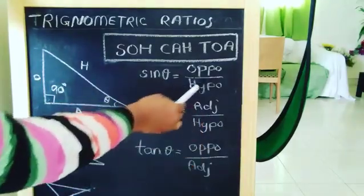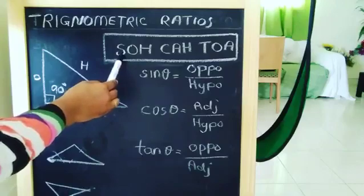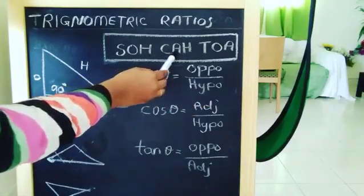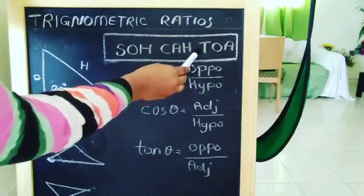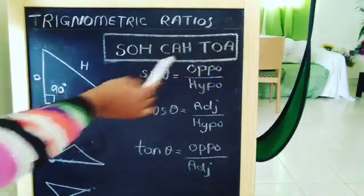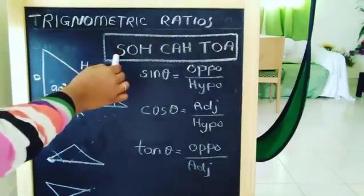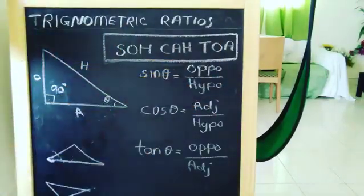But there is a difficulty to remember this, so you can use the shortcut SOHCAHTOA. Sin equals opposite by adjacent, cos equals adjacent by hypotenuse, and tan equals opposite by adjacent. SOHCAHTOA - remember the shortcut related to trigonometry. Thank you.